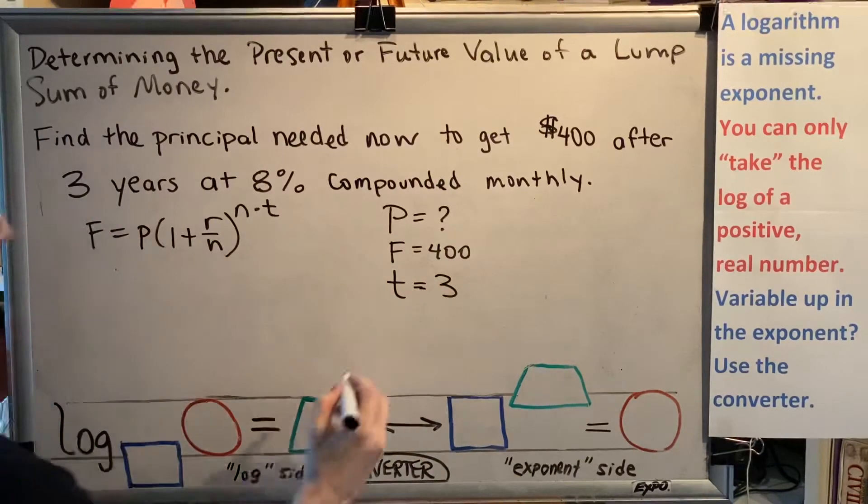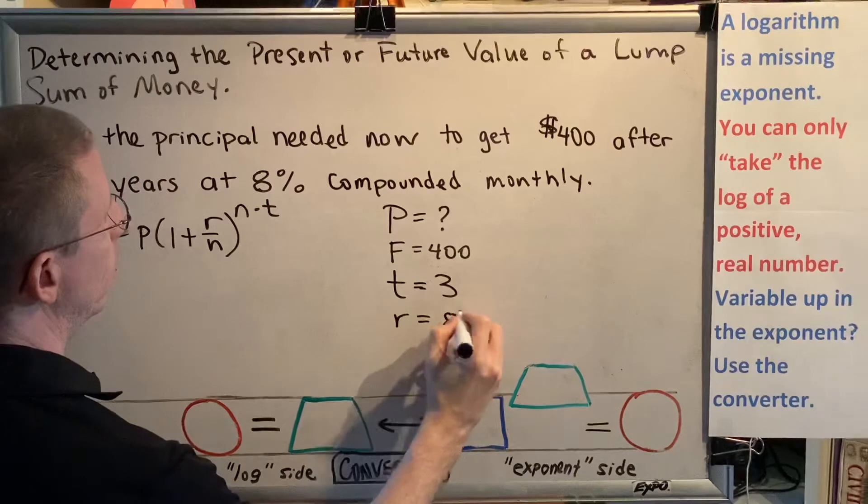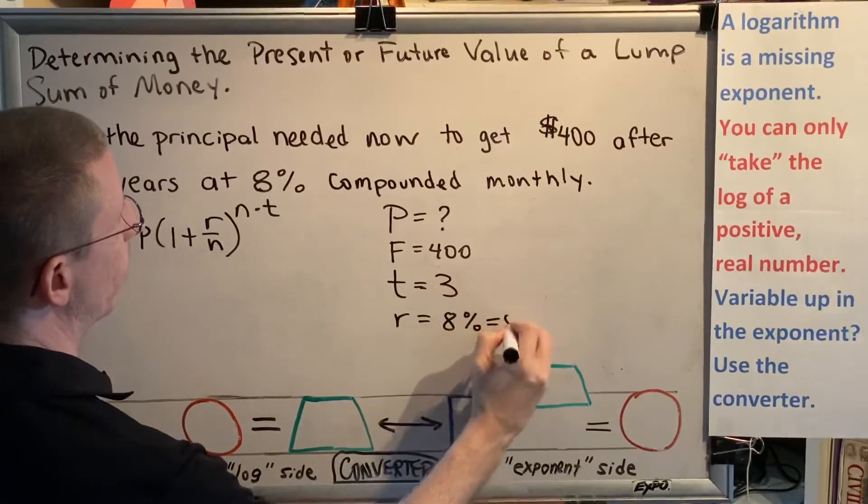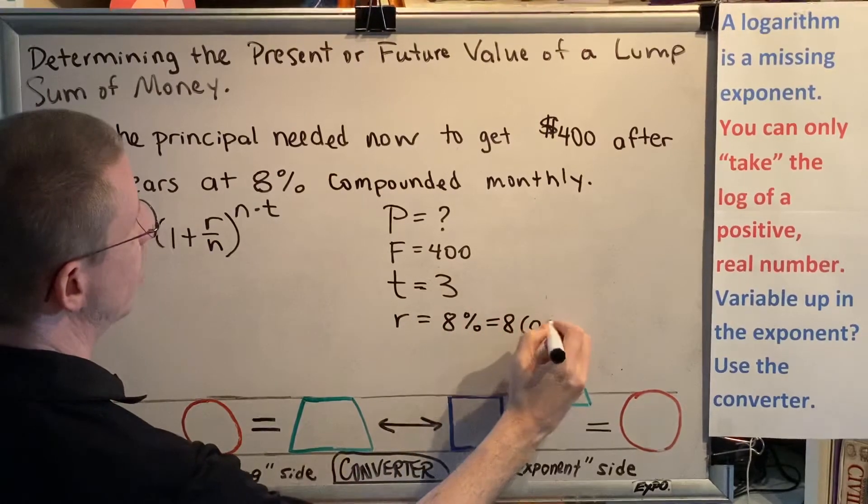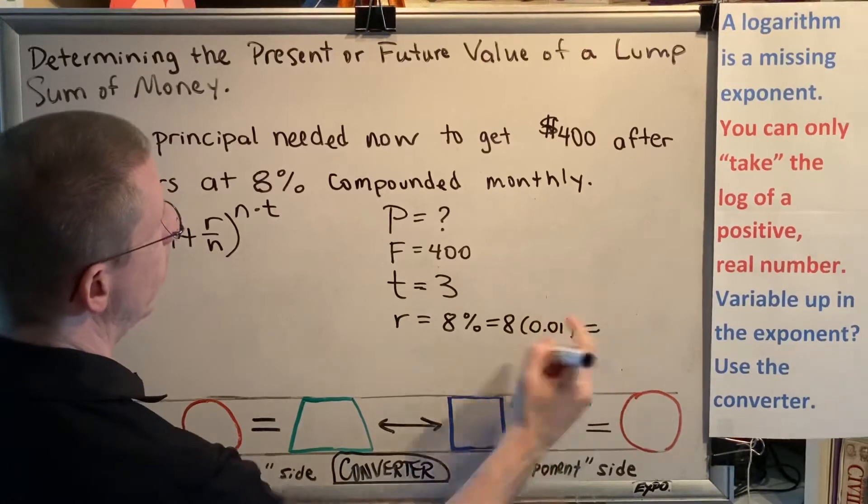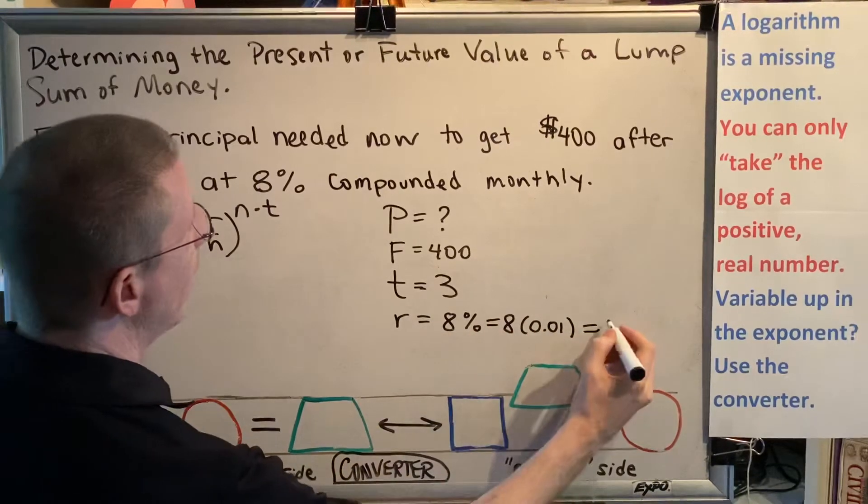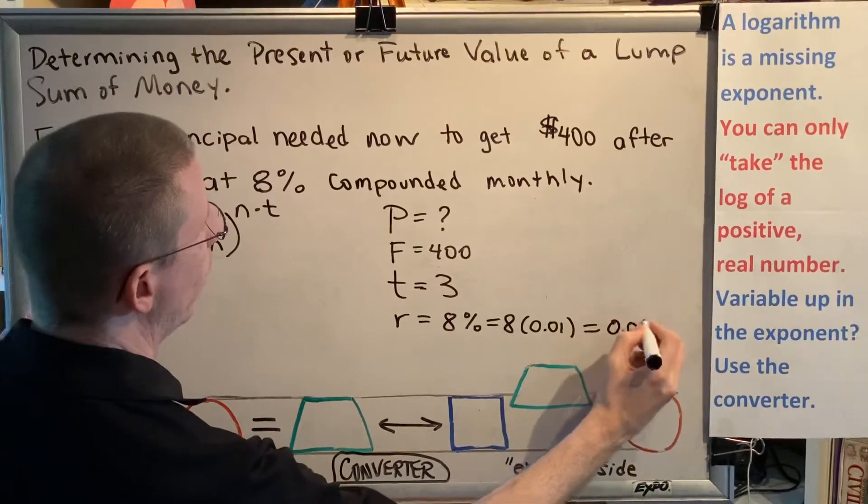After three years, which is telling me the value of t. At 8%, which is telling me the interest rate. Remember that the percent symbol is the same as the decimal 0.01. Side by side means multiply. 8 times 0.01 is 0.08.